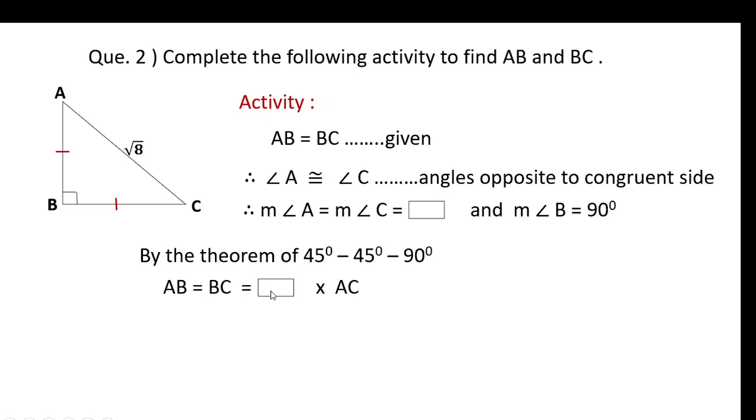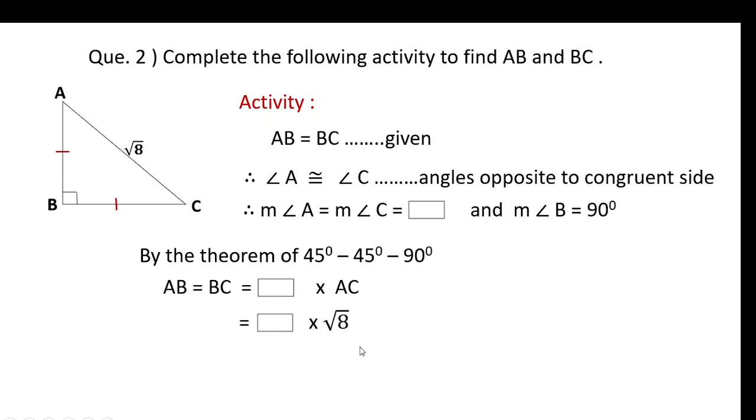Therefore AB equals 1 upon root 2 into root 8. Factoring root 8 as root(4 × 2) gives 2 root 2. The root 2 in numerator and denominator cancel, leaving the answer as 2.